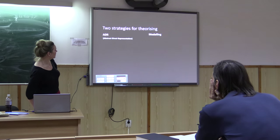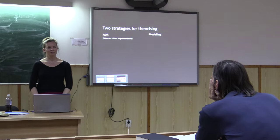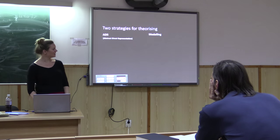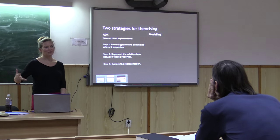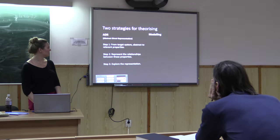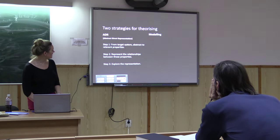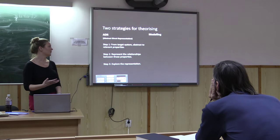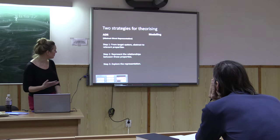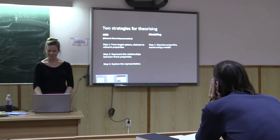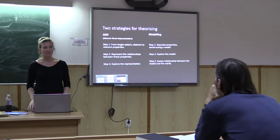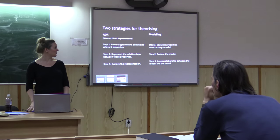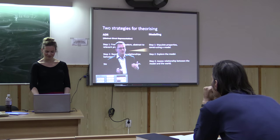Weisberg says there are two, broadly speaking, strategies for theorizing: abstract direct representation (ADR) and modeling. In abstract direct representation, you start with a target system, you abstract away from the relevant properties, you represent the relationships between those properties, and then you explore that representation. Modeling strategies also have three steps: in step one, you stipulate properties and construct a model; in step two, you explore the model; and in step three, you assess the relationship between the model and the world.